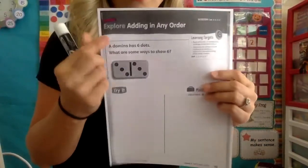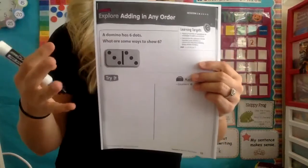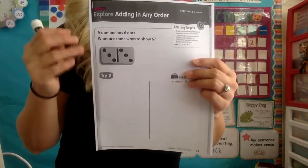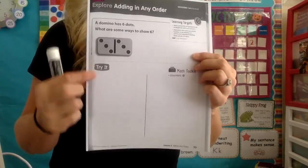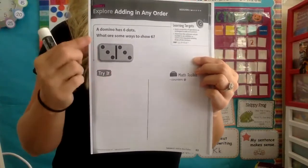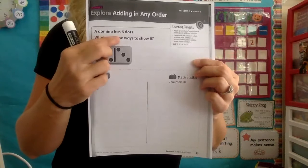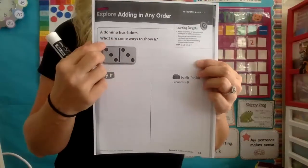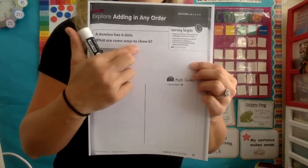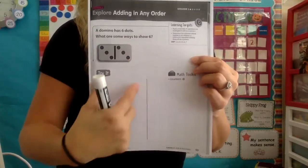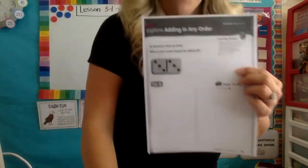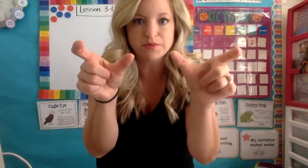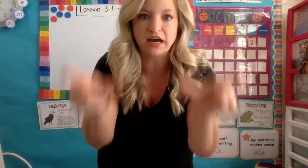I'm on page 53. If you have a packet, it says lesson three, session one — we're going to explore, which means you're really going to try for yourself. It says 'try it on your own': a domino has six dots, what are some ways to show six? You have two different columns; they've put a line down the center. Columns go up and down, like the columns on the White House.